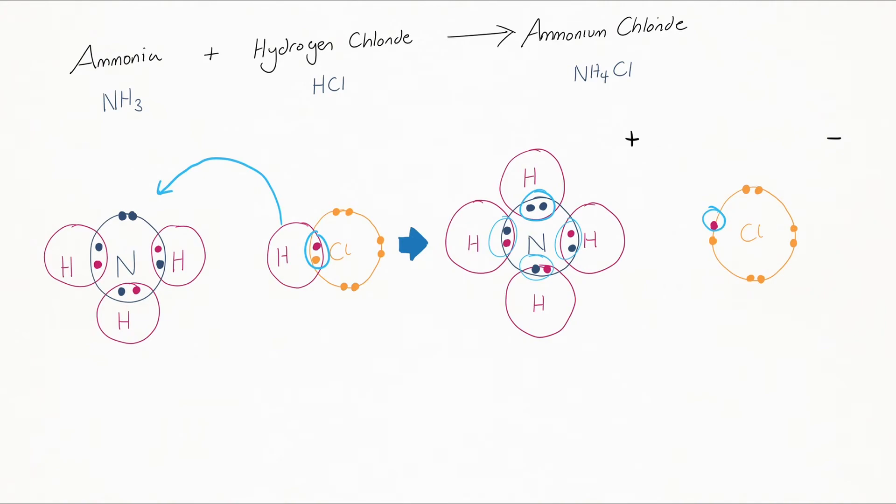As there is an extra electron left behind, this means that the chlorine is now electrochemically negative. And as the ammonium has now got more protons than electrons, it's electrochemically positive.